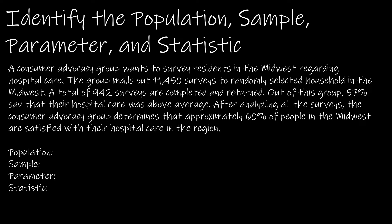Let's take a look at an example for identifying the population, sample, parameter, and statistic. A consumer advocacy group wants to survey residents of the Midwest regarding hospital care. The group mails out 11,450 surveys; 942 are completed and returned. 57% of those 942 say their hospital care was above average. The statisticians then determine that approximately 60% of people in the Midwest are satisfied with their hospital care.